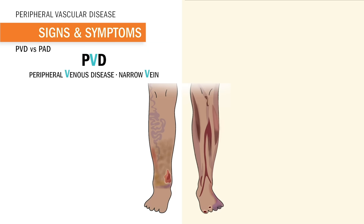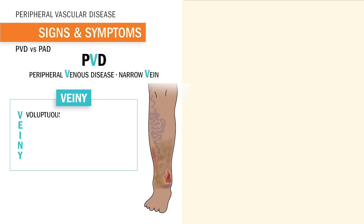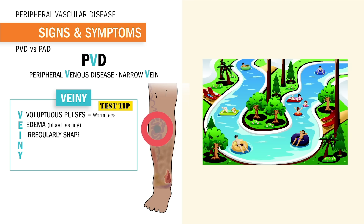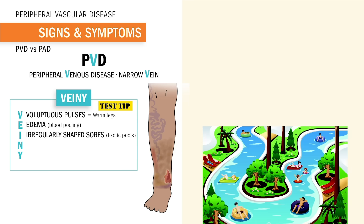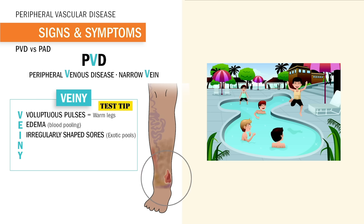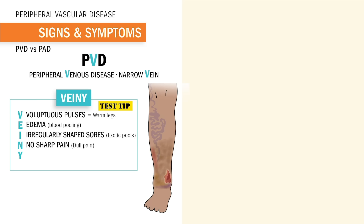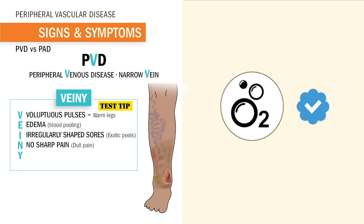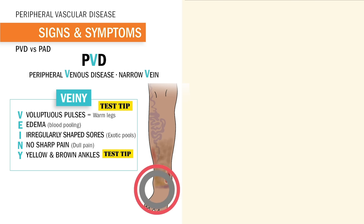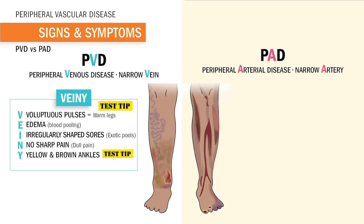For signs and symptoms, PVD affects the veins — use the acronym VEINY. V is for voluptuous pulses, meaning blood is being pumped; the arteries are fine, so the legs are warm. E is for edema, where blood starts pooling. I is for irregularly shaped sores — think of an exotic pool with a weird shape, very different from the boring PAD sores that are round and smooth. N is for no sharp pain; instead we have dull pain, because we don't have an oxygen problem. Y is for yellow and brown ankles — big test tip.